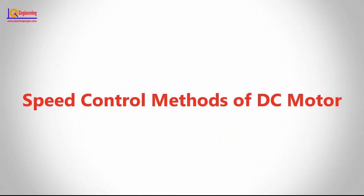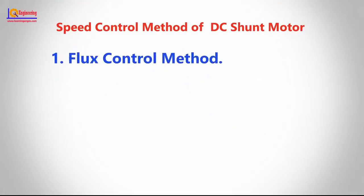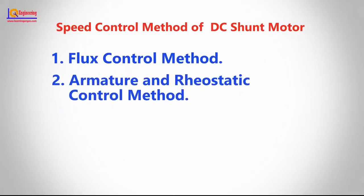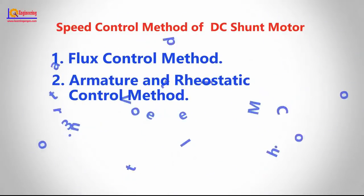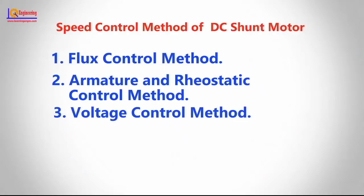In this video, we will learn different speed control methods of a DC motor. Speed of a DC shunt motor is controlled by the following methods: 1. Flux control method, 2. Armature and rheostatic control method, 3. Voltage control method.